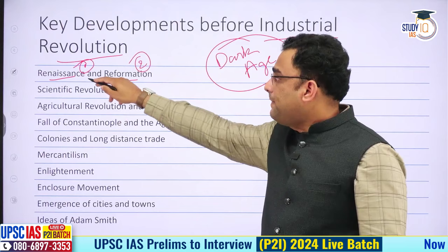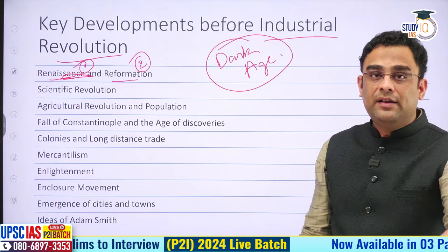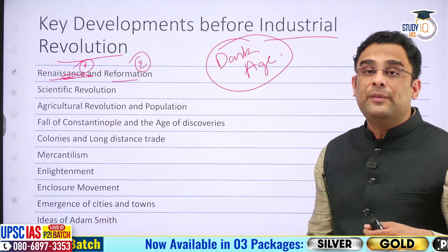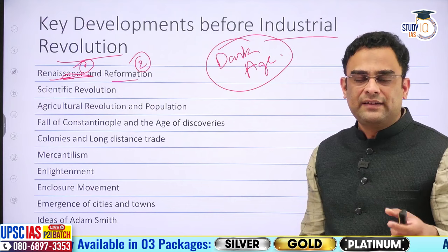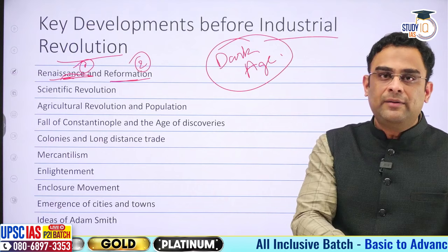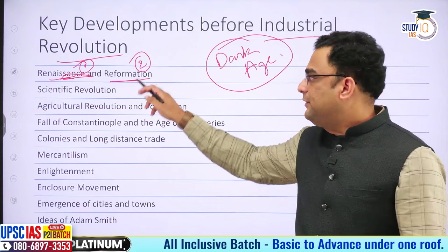Second is the Reformation. As Europeans understood the havoc the Christian church had played with their collective life, there were demands for reforming religion. Several movements emerged, such as the Protestant movements, which were most dominant. Their aim was not to be irreligious or atheist, but to purge religion of various corrupt practices that had come in during medieval times. This period is called the Reformation.